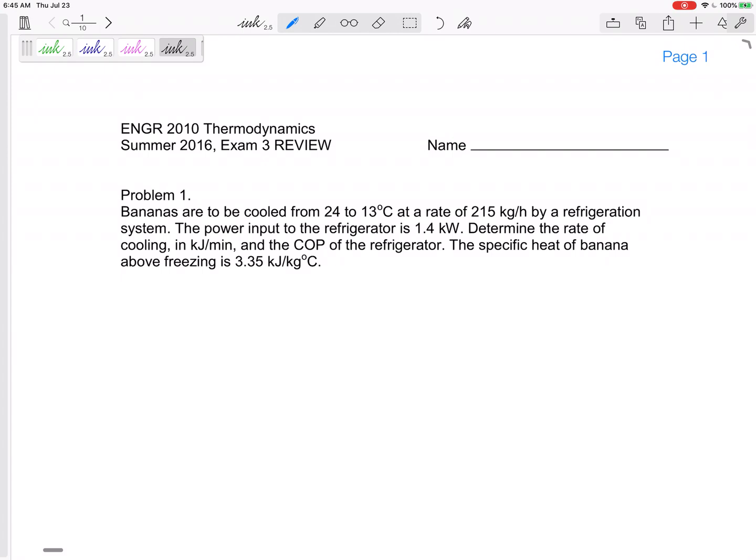Let's look at this one. Bananas are to be cooled from 24 degrees to 13 degrees C at a rate of 215 kilograms per hour by a refrigeration system. The power input of the refrigerator is 1.4 kilowatts. Determine the rate of cooling in kilojoules per minute and the coefficient of performance of the refrigerator. Specific heat of banana above freezing is 3.35 kilojoules per kilogram K.